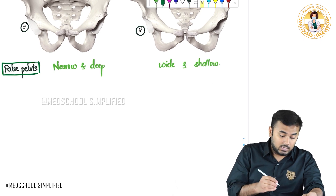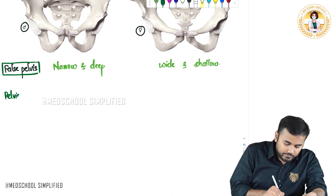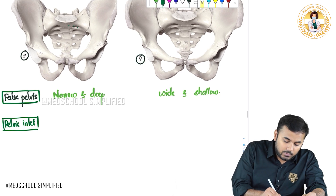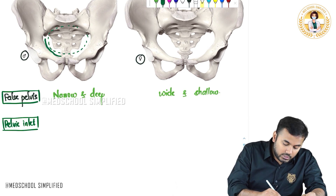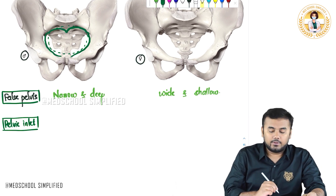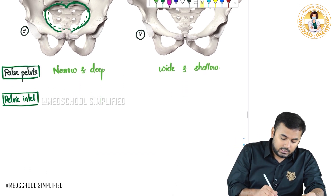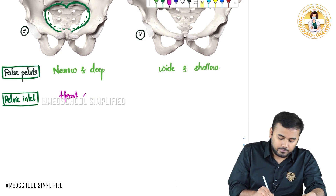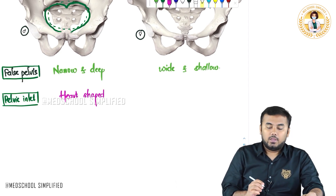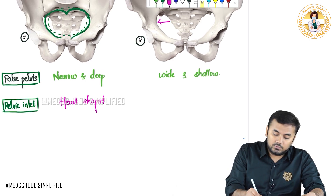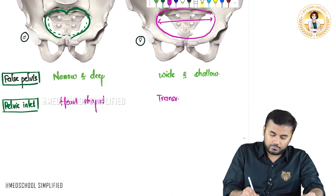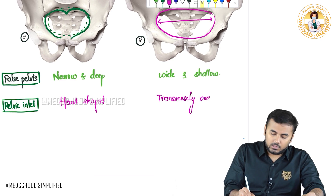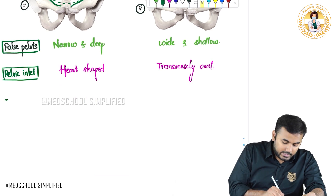After the false pelvis, we shall look at the pelvic inlet. This part over here is the pelvic inlet. The pelvic inlet in males is heart-shaped, whereas the pelvic inlet in females is transversely oval.